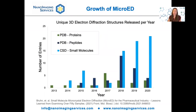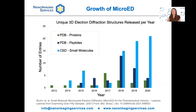This field has been growing rapidly since the first protein structure was determined by this method in 2013 by the Gonin lab. Here we've plotted the number of novel protein and peptide structures deposited in the PDB from electron diffraction, as well as structures deposited in the Cambridge Structural Database, the CSD, for small molecules. As you can see, there's been a much more rapid growth of adoption for this technique for the determination of small molecule and peptide structures compared to proteins.